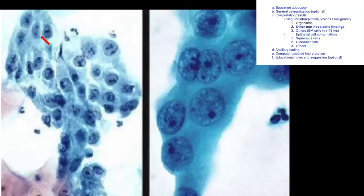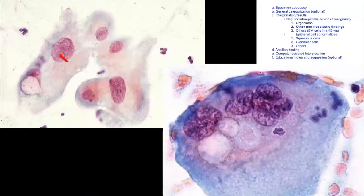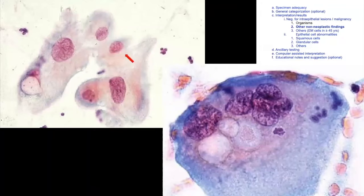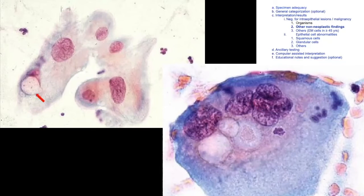Another very important feature of repair and regeneration: maintenance of polarity — the cells are all running in one direction even though nucleoli are present and chromatin is coarse. This maintenance of polarity is very important. Here the cells are enlarged, reddish as well as greenish, showing cytoplasmic vacuolations, and even one nuclear vacuolation. The nuclei are enlarged but the cytoplasm is also enlarged — maintenance of nuclear-cytoplasmic ratio. The key features are: two-tone appearance (two colors in one cell), multinucleation, and degenerative vacuolations — all features of radiation effect.